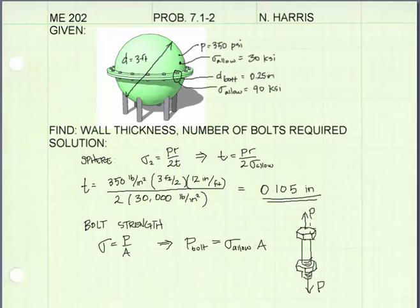And we can find what the maximum load p that we can put on a bolt is based on the allowable stress for the bolt, which was 90 ksi. And we can use this equation here and solve for p, which will be the force on a single bolt is equal to the allowable stress times the cross-sectional area. And a is the cross-sectional area of the bolt shank.